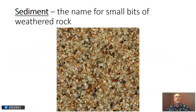Once we have a rock that has been broken down into really small bits, these small bits of weathered rock we just call sediment. You may have seen a word like this before from the rock cycle. Sedimentary rocks are actually rocks that are made from the smaller bits of weathered rock. So small bits of weathered rock — we just call those sediment.